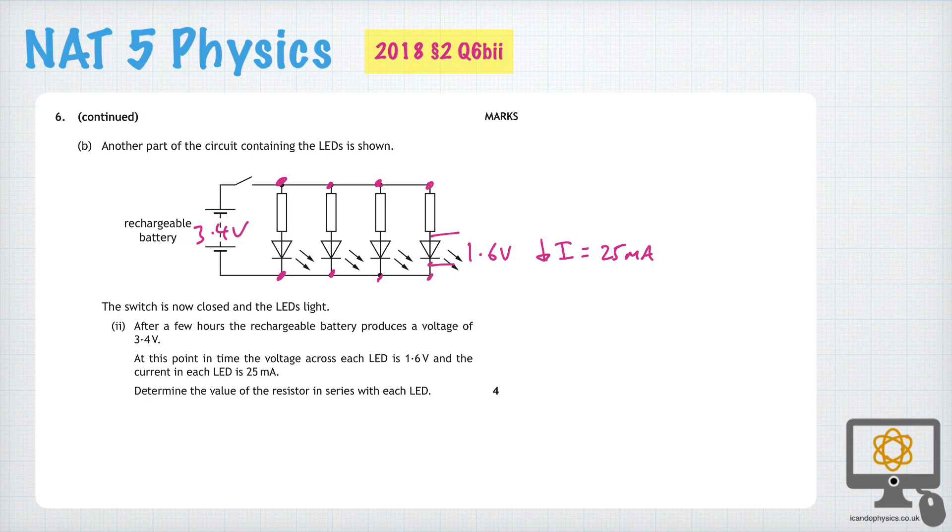Now the thing to remember is that the resistor itself is not getting 1.6 volts. It's getting the difference between 3.4 and 1.6 and that is 1.8 volts. And so now we know that the voltage across the resistor is 1.8. We also know that the current flowing through it will be the same, 25 milliamps. And so we can just use V equals IR to solve the problem.